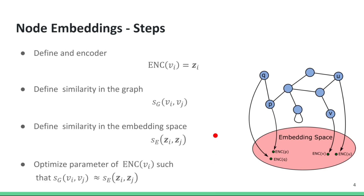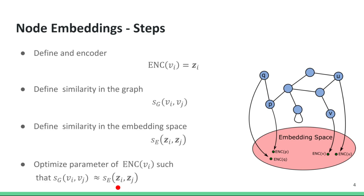Similarly, we need to define a similarity in the embedding space, which takes as input the node embeddings for nodes vi and vj, denoted here by zi and zj, and gives out another scalar. Then we need to optimize the parameters of the encoder function such that the similarity measure for a pair of nodes is approximately equal to the similarity measure of their embeddings.